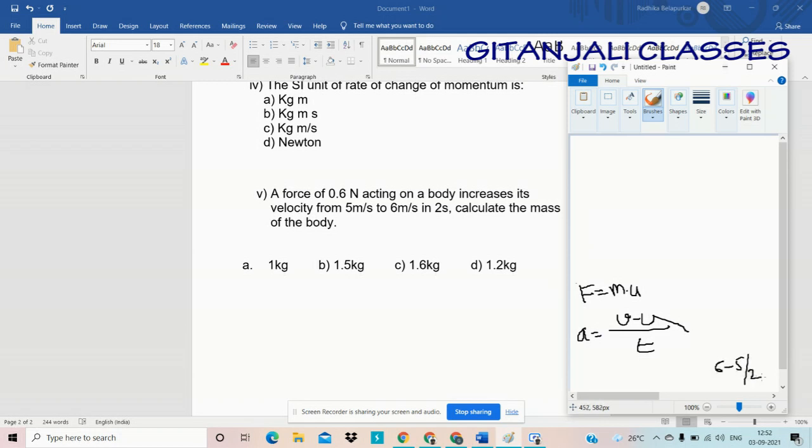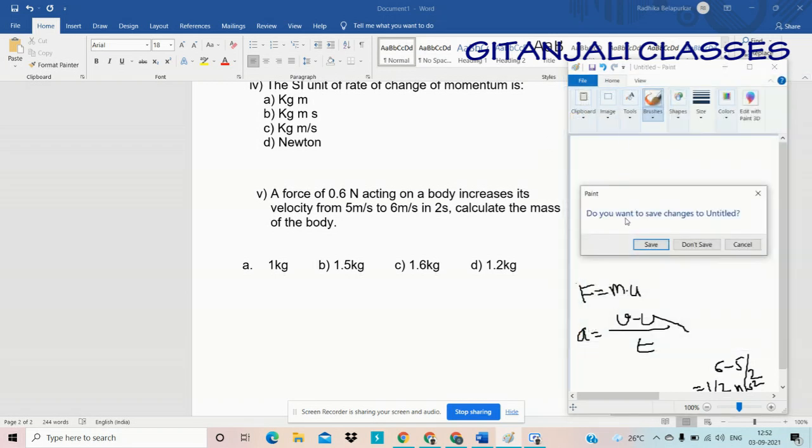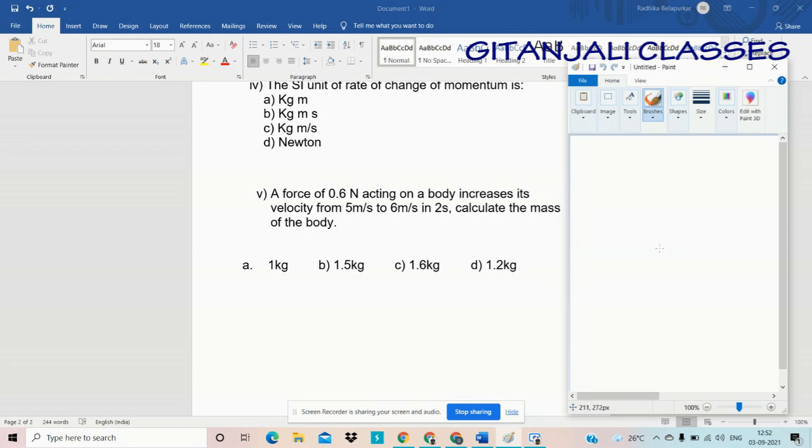This is happening in 2 seconds. So 6 minus 5 by 2 means I get 1 by 2 acceleration meter per second square. So mass is 0.6. Let me clear this. So sorry, force is given. So mass will become force by acceleration. So force is 0.6 N and acceleration is 1 by 2. So 0.6 into 2 equals 1.2 kg will be the right answer. So option D: 1.2 kg.